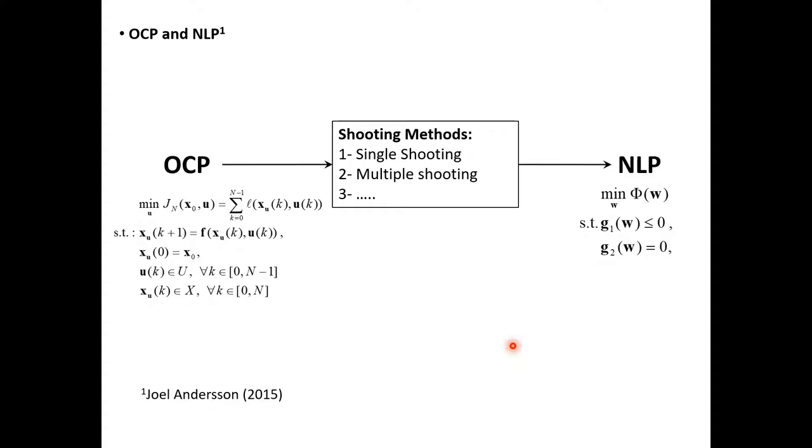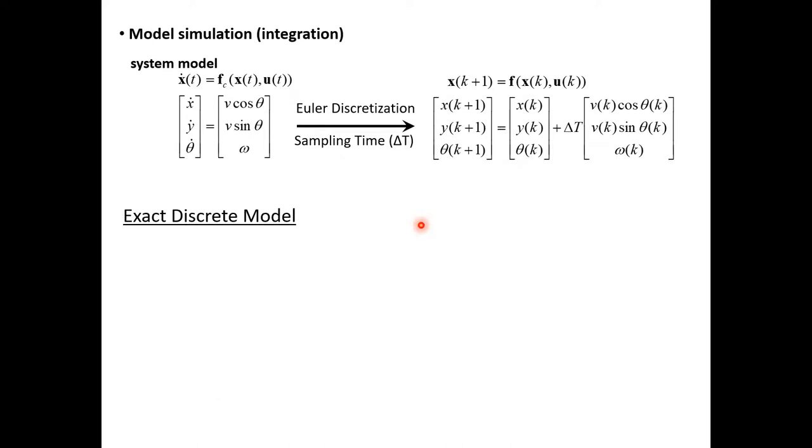We then showed how to convert the optimal control problem or the resulting OCP to a nonlinear programming problem or an NLP using the single and multiple shooting methods. In this short lecture or video I will give a particular focus on simulating the dynamics of the considered system, which is a non-holonomic mobile robot.